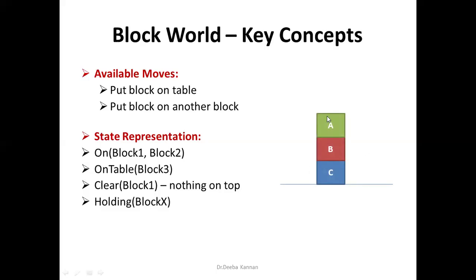Here is an example: we have blocks C, B, and A. We can say on(B, C) meaning B is on C, and on-table(C) meaning C is on the table. The topmost block A is clear — there is nothing on top of it, so I can place anything there. If I want to place something on C, I cannot do it directly; I have to remove A, then remove B, and only then can I place something on top of C.